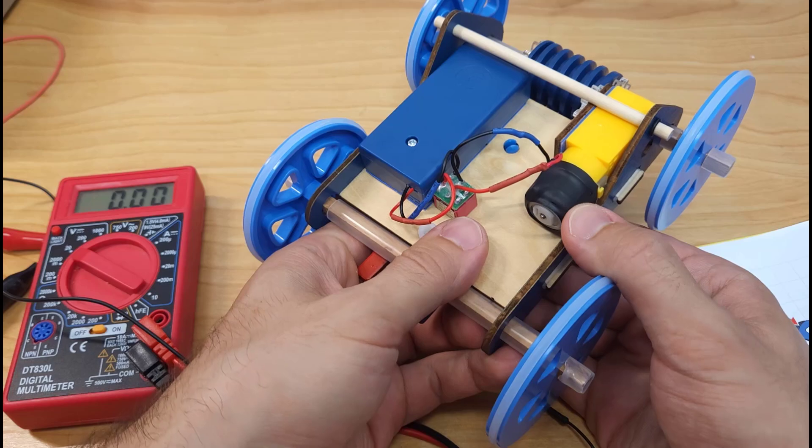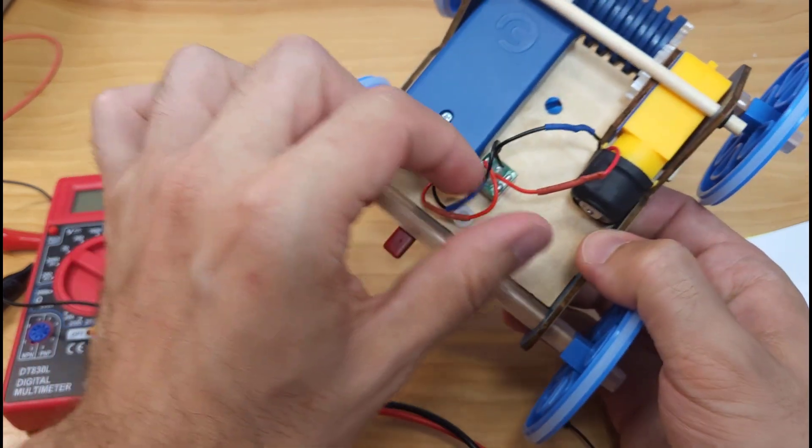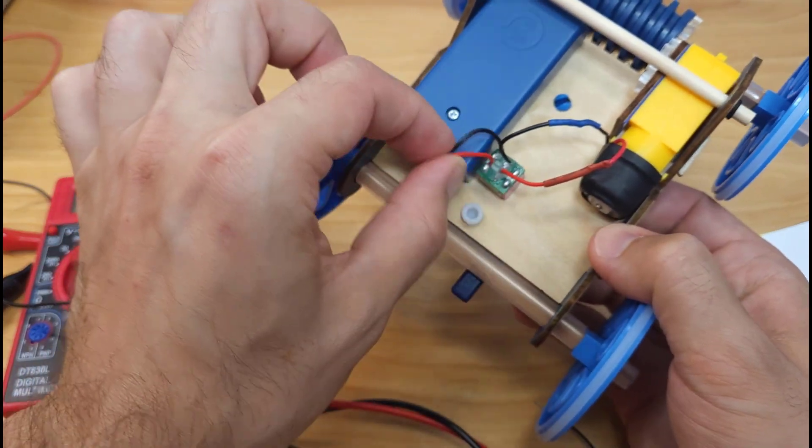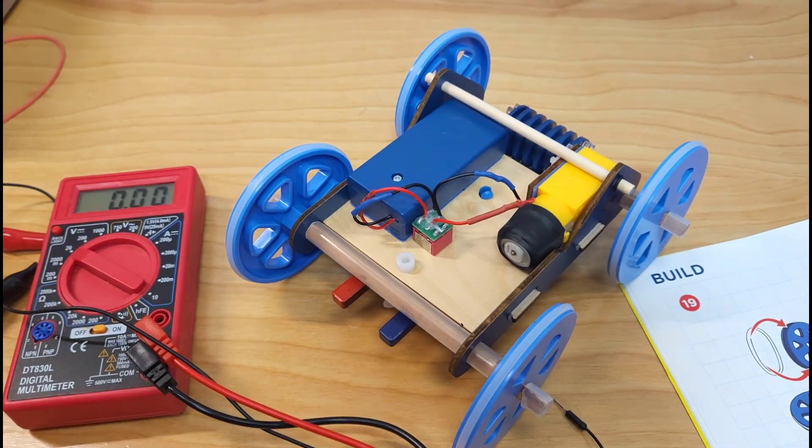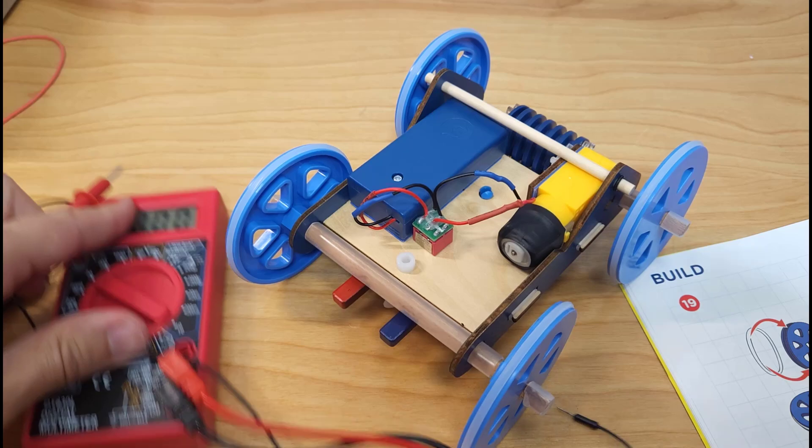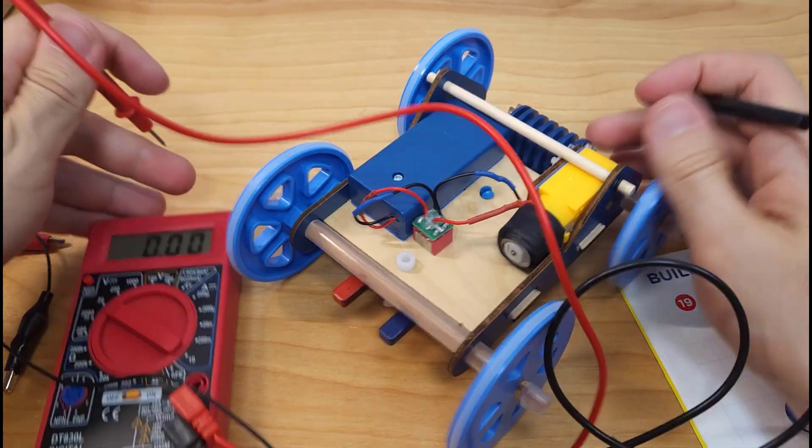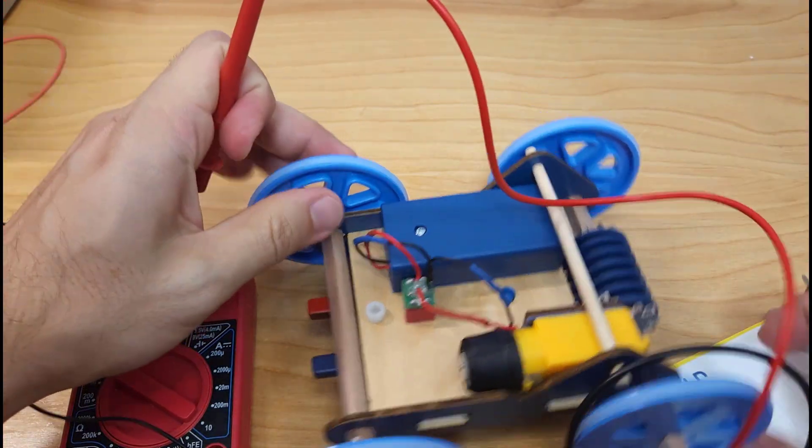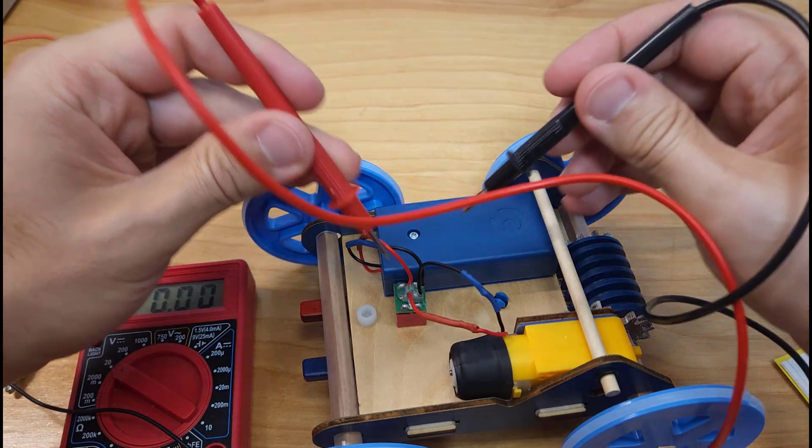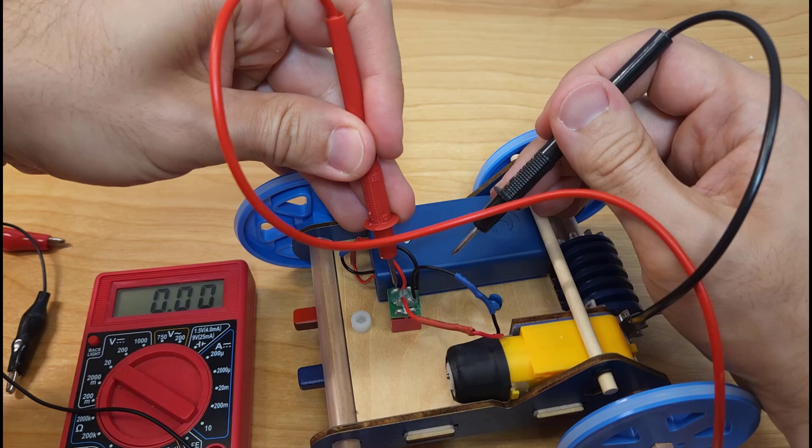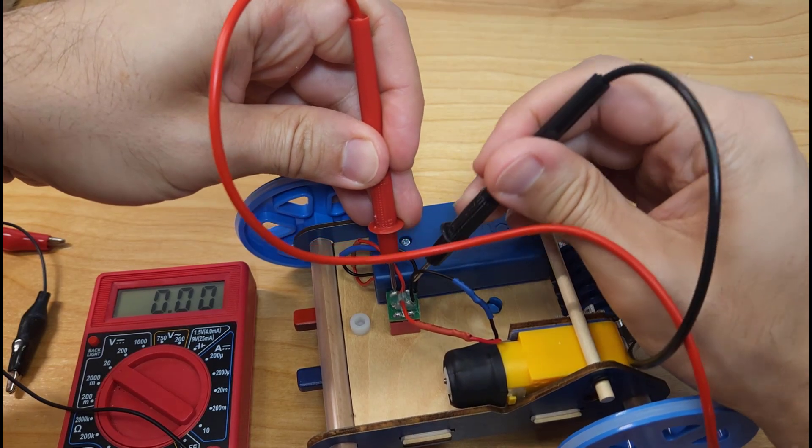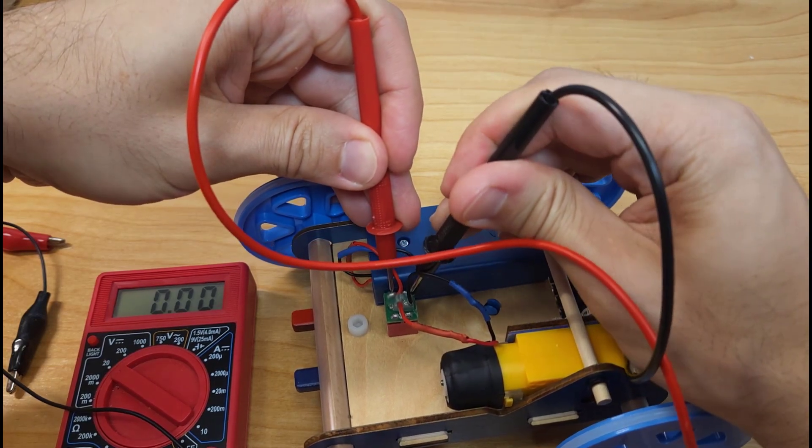So what I decided to do now that I have soldered over all those pins and can't measure them as easily is just take the probes of my multimeter and poke through the hot glue on the switch itself here to see if I'm getting voltage. So if I poke through, I'm trying to keep my hand out of the way so you can see the multimeter screen. There's some hot glue over the solder connections on the back of the little switchboard here.